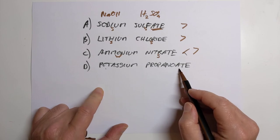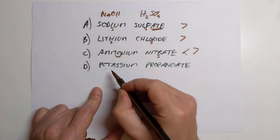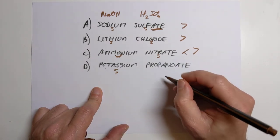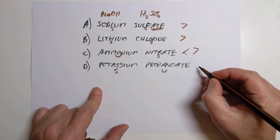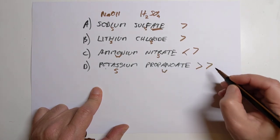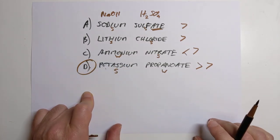The last one, we better get it right, otherwise I've read the question wrong. So this is a strong base and this is a carboxylic acid, which is one of our weak acids. So this will be greater than 7. And that, of course, is our answer.